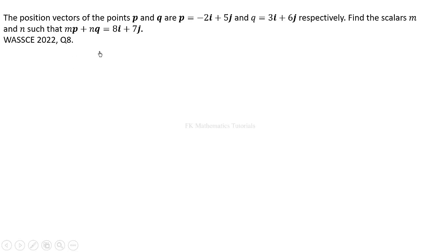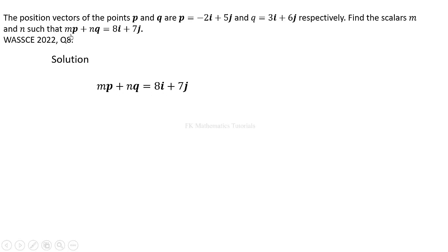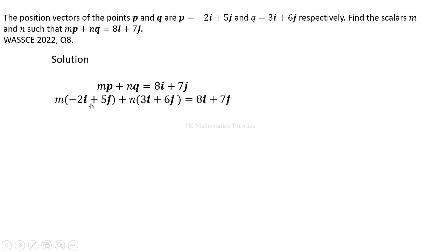We can set up two equations involving m and n and solve simultaneously. We substitute the given vectors into the equation, so P goes in and Q also goes in. That gives us m times (negative 2i plus 5j) plus n times (3i plus 6j). We expand by doing the scalar multiplication: m times each component and n times each component.